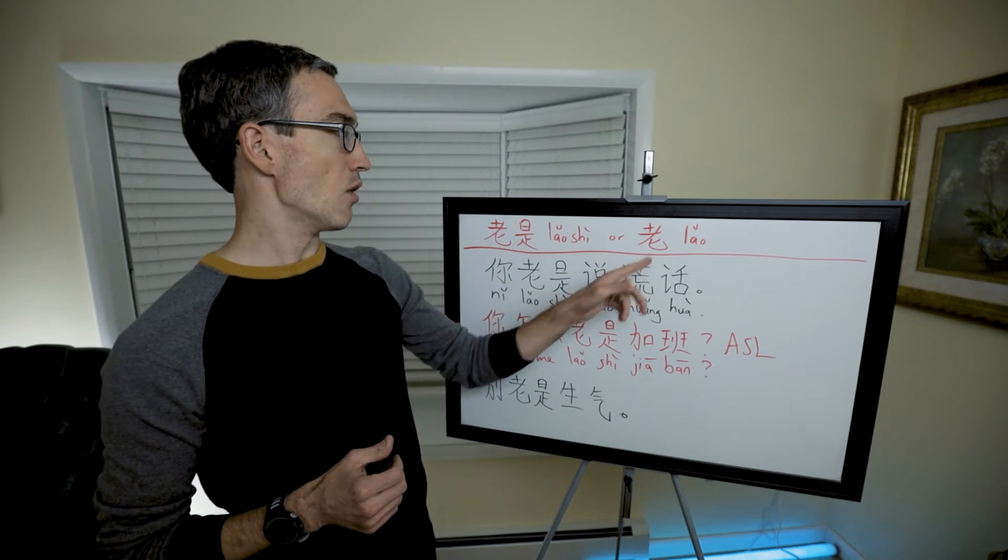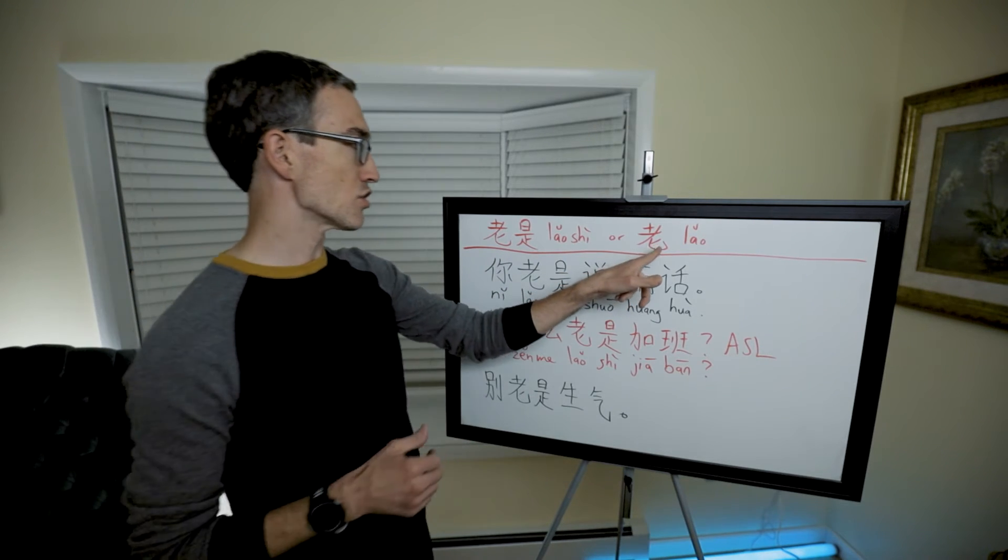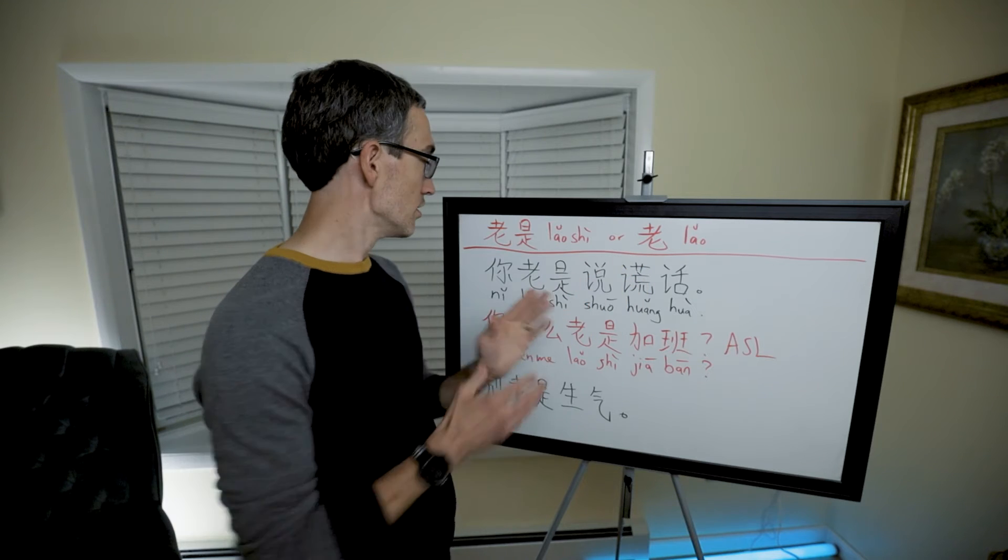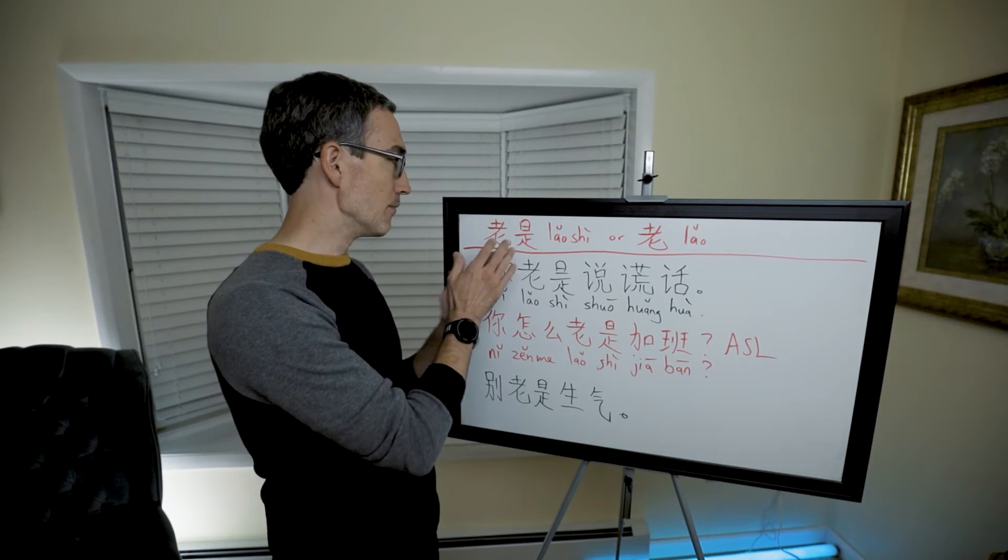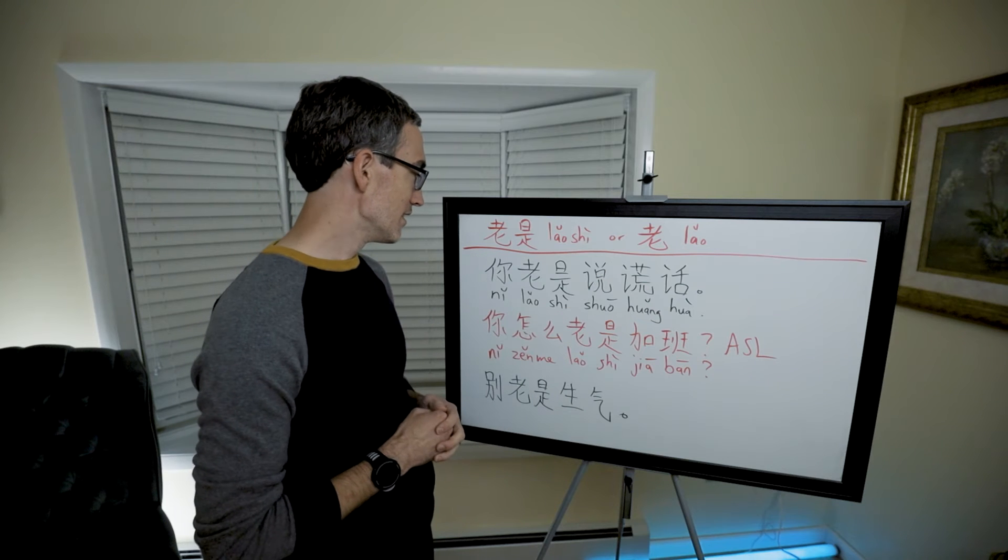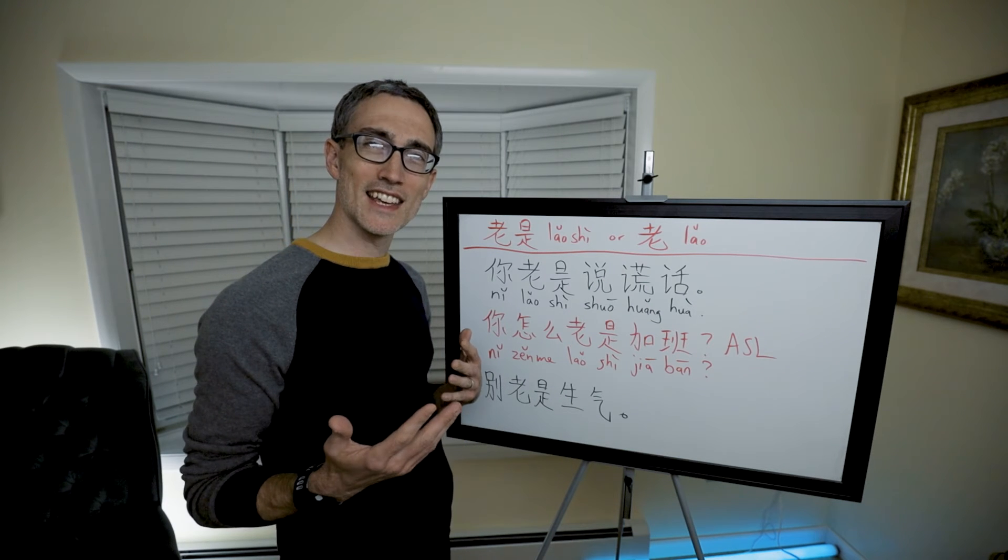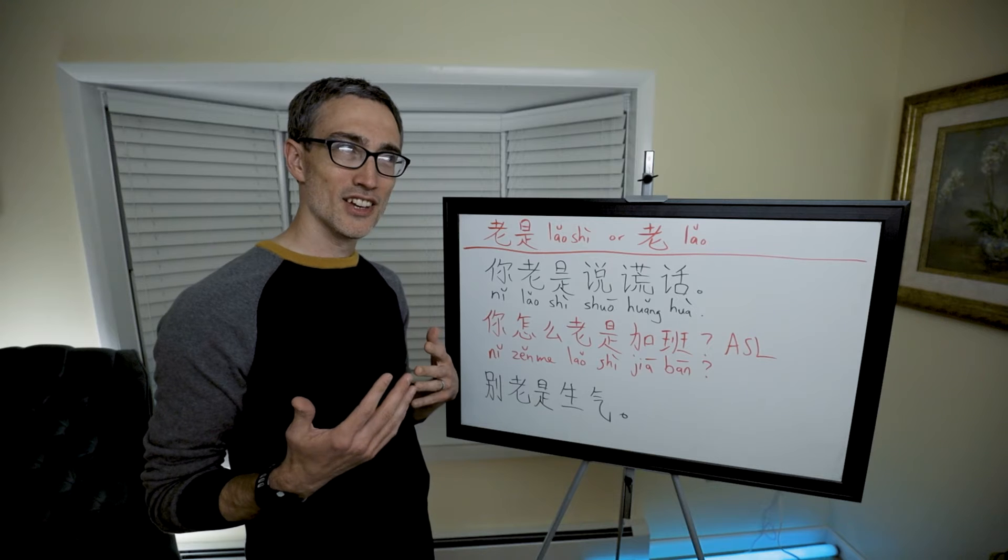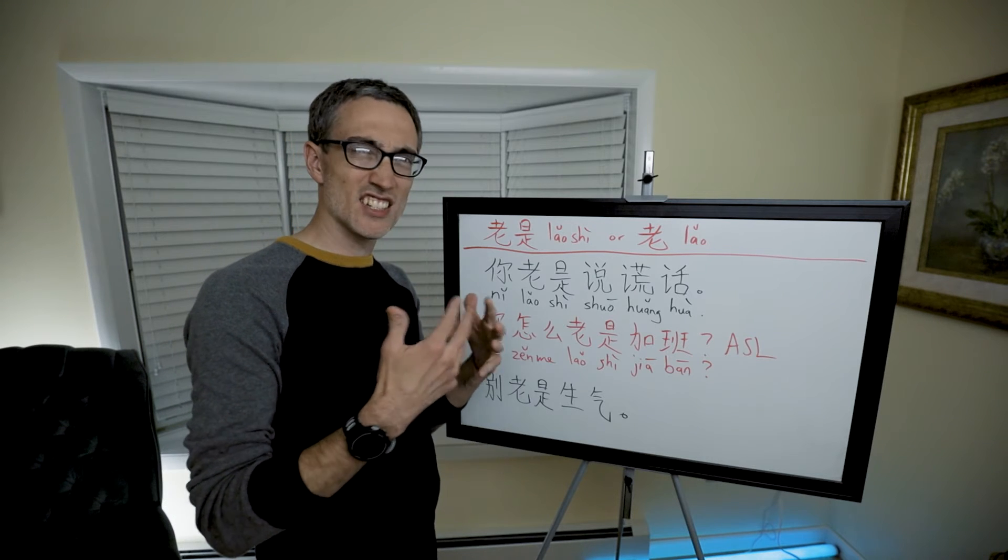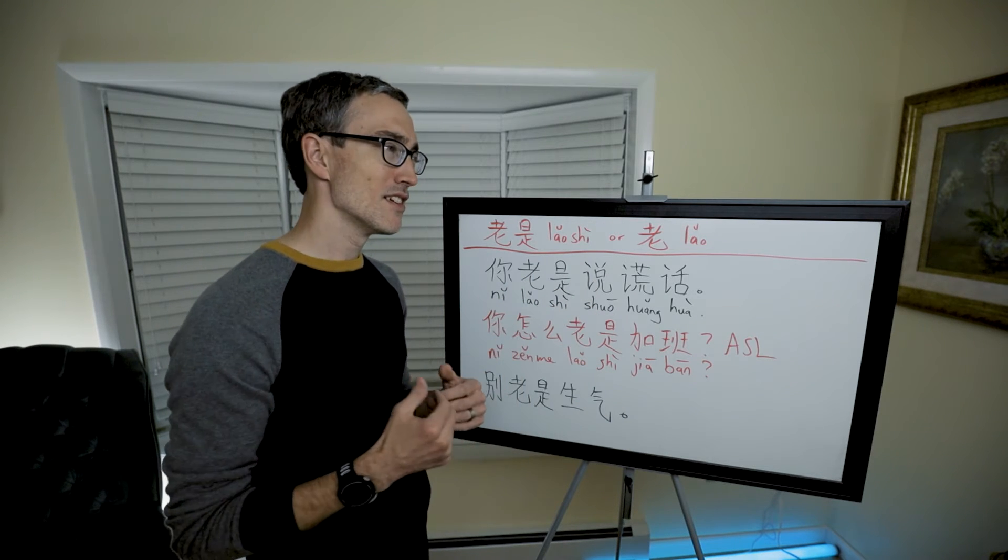老是, or 老. The 老 is a shortened version. It means old. So old is, but it's a word together, or just old. And it can kind of, you can kind of get the feeling like something, you're sick, I'm sick and tired of you doing this all the time. So it's old.